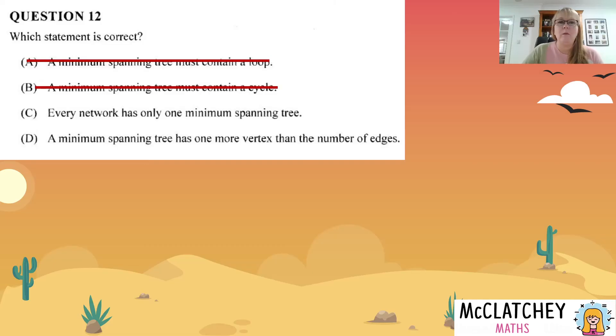Okay. So our next statement, C, every network has only one minimum spanning tree. Now you might be tempted to think that's true. So let's actually draw a really simple network, a square. You could even go simpler, a triangle. Okay. Now let's have a think about what the minimum spanning trees on this would look like. Well, here's one. Okay. So every vertex is connected and there's no loops, but we could also draw it that way. We could draw it that way and we could draw it that way. In fact, this network, it's only a simple network. It's got four minimum spanning trees. Okay. So we know we can now eliminate C. Now by that process of elimination, you could probably just colour in D and move on, but it's also a good idea to understand what D is telling us as well, just in case we're not a hundred percent sure.